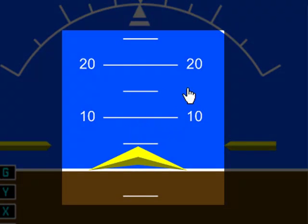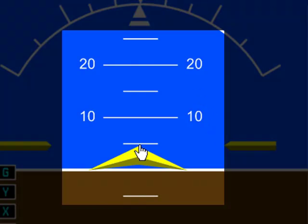In the middle, you'll also see a pitch scale, which shows you your nose's relative pitch to the horizon. Right now, because we're in a Cessna 182, we're already pitched up about 5 degrees, and that's because on the ground the Cessna 182 sits a little tail-low and nose-high, which is why we see our pitch indicating like that.